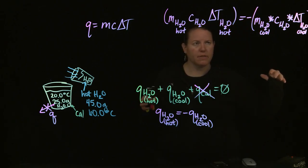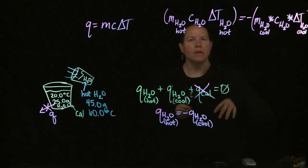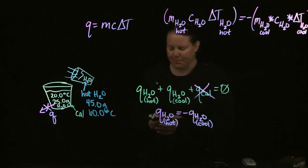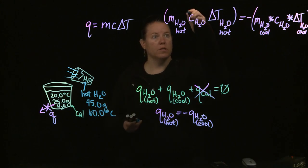And we know that C of the water divided by C of the water would be equal to one. So because of that, you can cross it out.